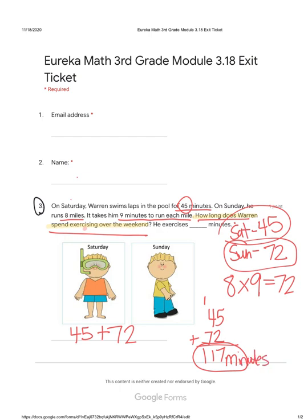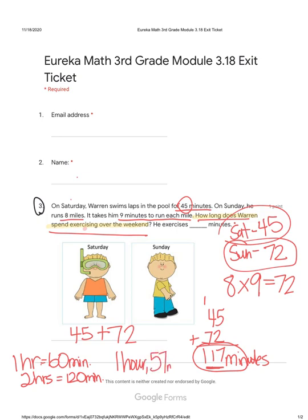To take it a step further — can you tell me how long in hours? If we know one hour is 60 minutes, then two hours would be 120 minutes. So in three more minutes he would be at two hours, which means the answer is one hour and 57 minutes.